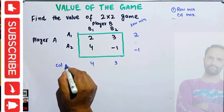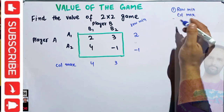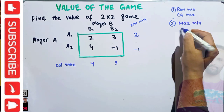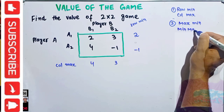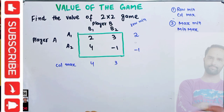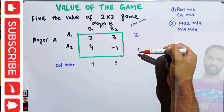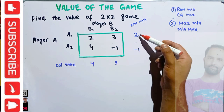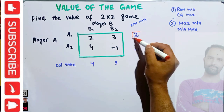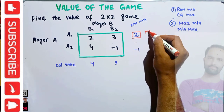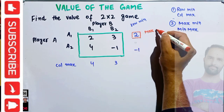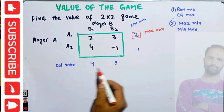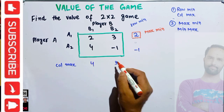The second step is to find the maximin and minimax. By maximin, we mean the maximum value of the row minimum. The maximum of 2 and minus 1 is 2, so our maximin is 2. We also need to find the minimax, which is the minimum of the column maximum values. The minimum between 4 and 3 is 3, so our minimax is 3.